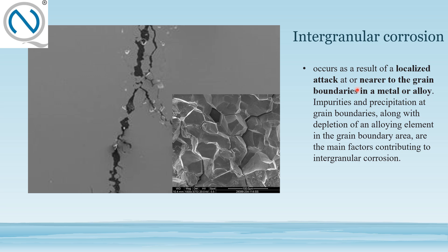Next is intergranular corrosion. Looking at the microstructure level, it occurs as a result of localized attack at or near the grain boundaries. You can see intergranular corrosion in a metal alloy. Impurities and precipitation at grain boundaries, along with depletion of alloying elements in the grain boundary area, are the main factors contributing to intergranular corrosion.